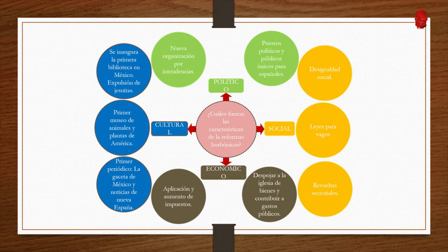Let's start with the political sphere. The first reform implemented was the new organization by intendencias — a way of organizing a country, which today we know as states. Currently we have 32 states. In that era it was necessary to divide Nueva España into intendencias. Each intendencia had its regent, a person in charge of administering and controlling the political system. The role of the viceroy was less necessary, and there was a bit more control.